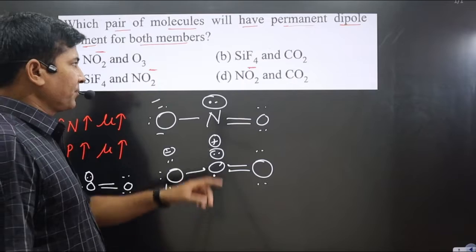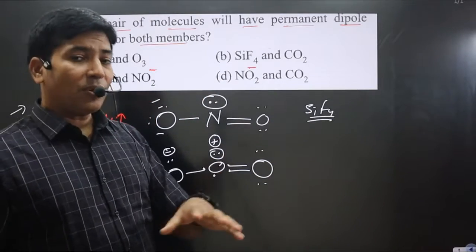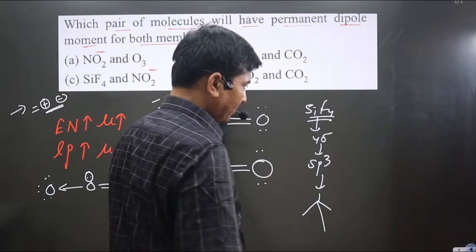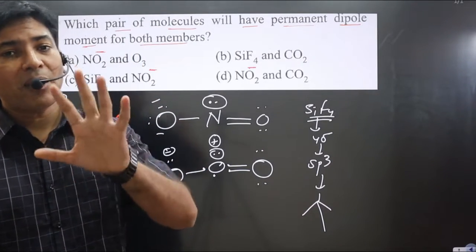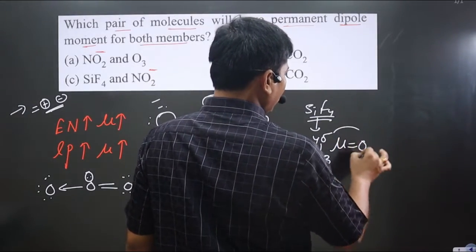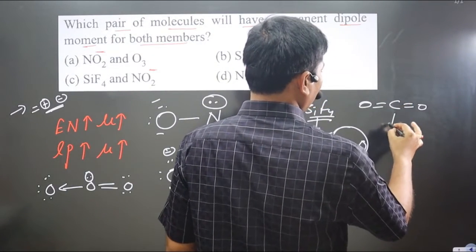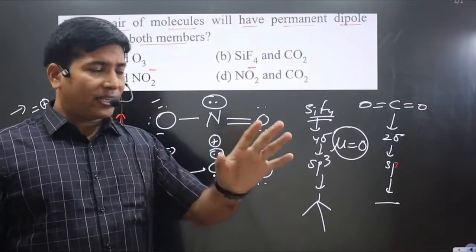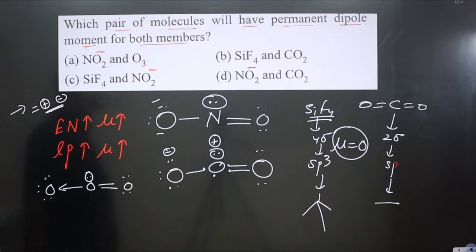For the second option: SiF₄ — silicon forms four sigma bonds, so hybridization is sp3 and geometry is tetrahedral. The central element carries no lone pair, and a molecule with regular geometry obtained by hybridization always has dipole moment zero. Similarly for CO₂: carbon forms two double bonds (two sigma bonds), hybridization is sp, giving linear geometry. Carbon carries no lone pair, so its dipole moment is also zero.